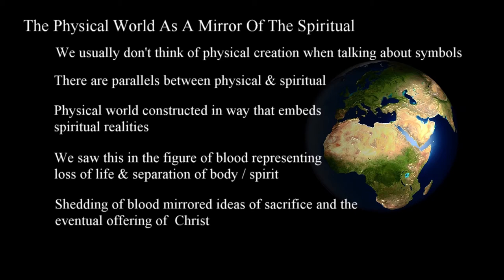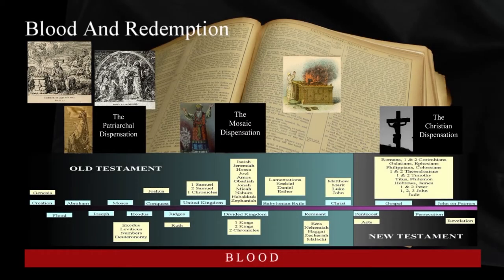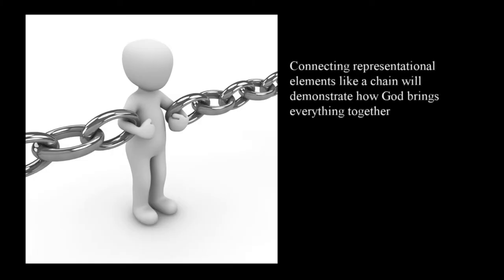The death of Christ, the shedding of blood, and salvation are points of study that are so well known that we don't question the relationship of the involved physical and spiritual components. But we can take that further in our study. An obvious but overlooked point in discussion of things like blood is the fact that God fabricated creation with physical elements reflecting things that are spiritual. We're told that the plan to save mankind was in the mind of God before the world began in Titus 1:2. It's logical to conclude then that physical things were created in a way consistent with that plan. If we construct a chain connecting the appropriate representational elements, we can see how the plan works and comes together as a whole.